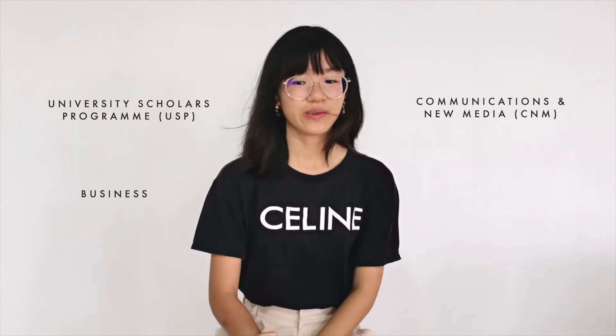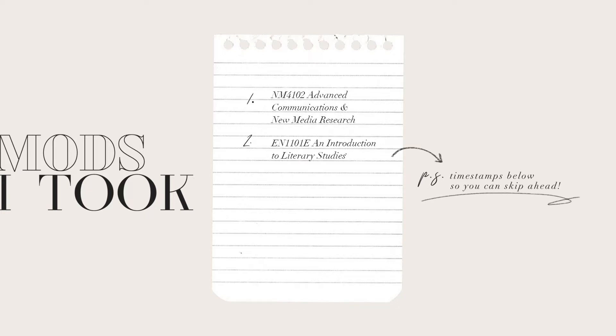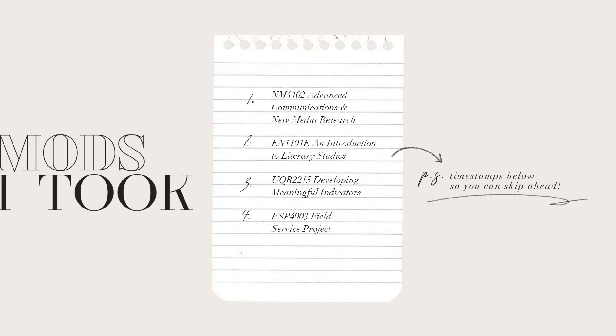For this semester, I took four modules from Business, Communications and New Media, USP and English Literature, and in total my modules were worth 21 MCs. The four modules I took and will be covering in this video are NN4102 Advanced Communications and New Media Research, EN1101E An Introduction to Literary Studies, UQR2215 Developing Meaningful Indicators, and FSP4003, my Field Service Project for Business. So without further ado, let's begin!